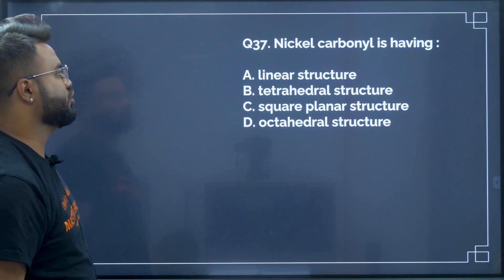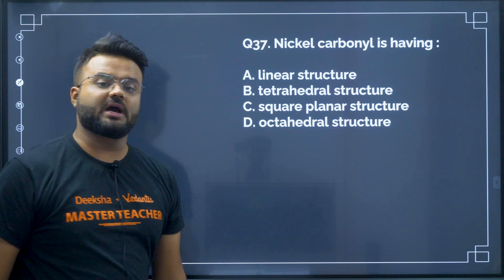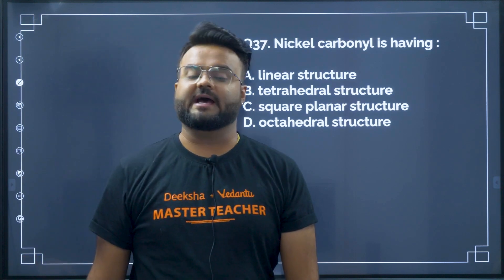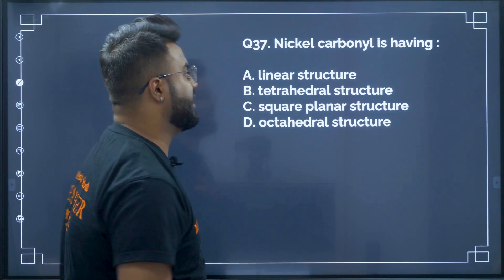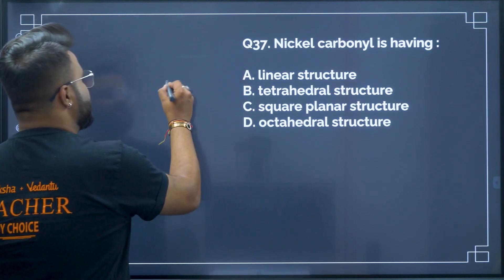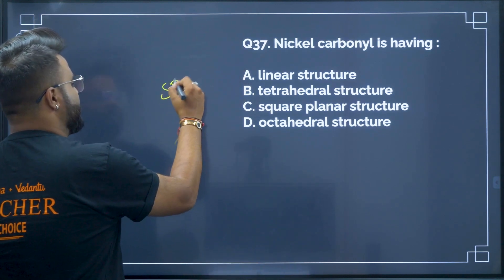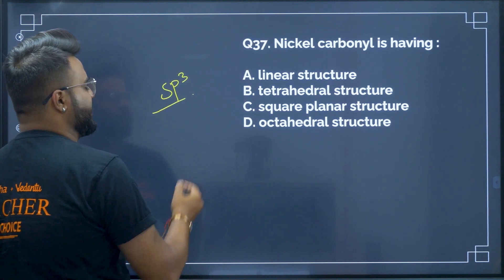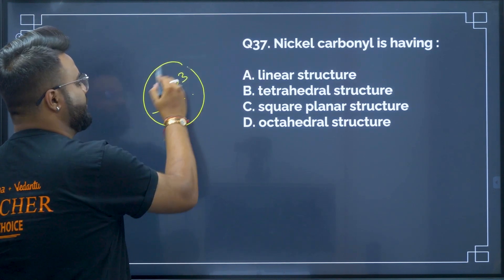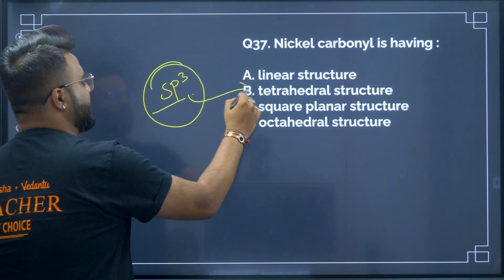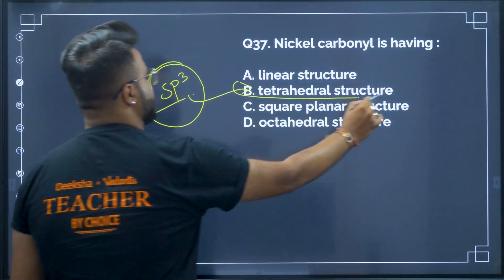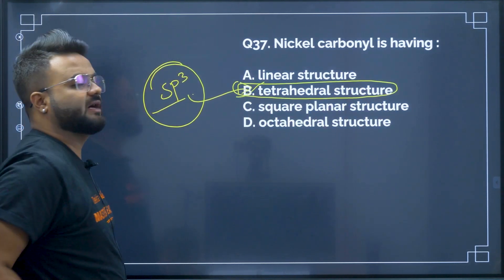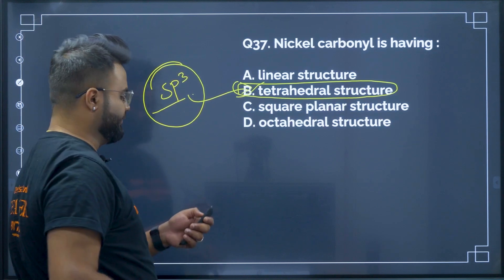Question number 37: nickel carbonyl has sp3 hybridization, therefore it will be in a tetrahedral structure. Option B will be your correct answer.